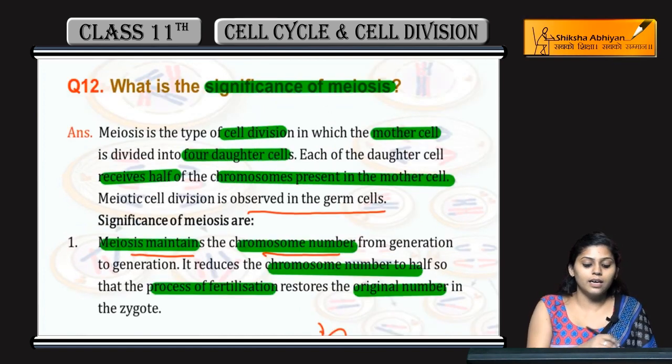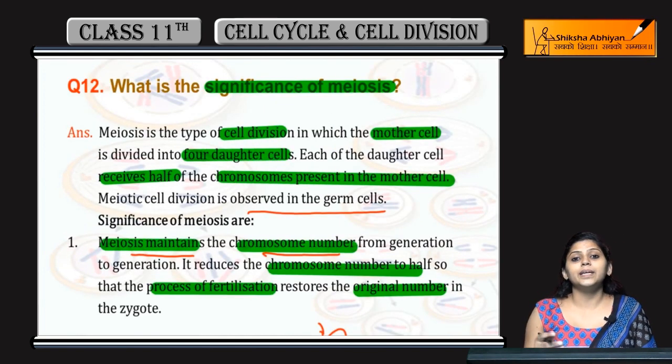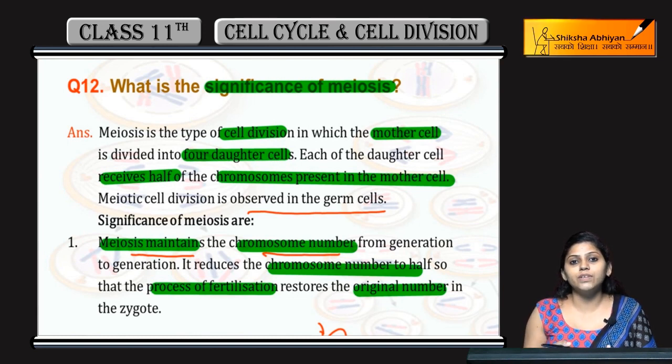So the main significance of meiosis is that it maintains the chromosome number, as the half number in daughter cells is restored upon fertilization.